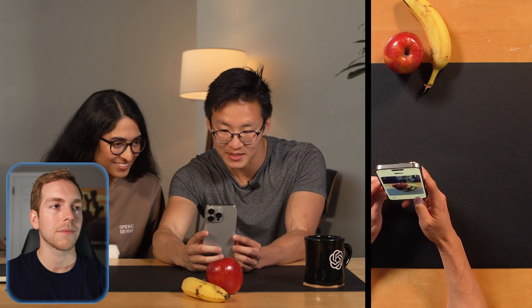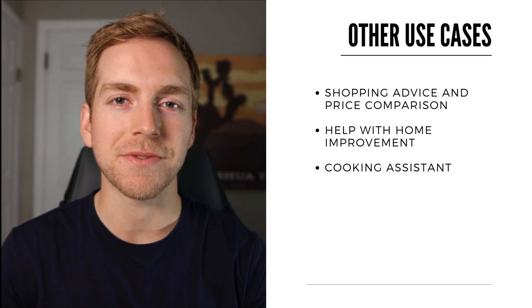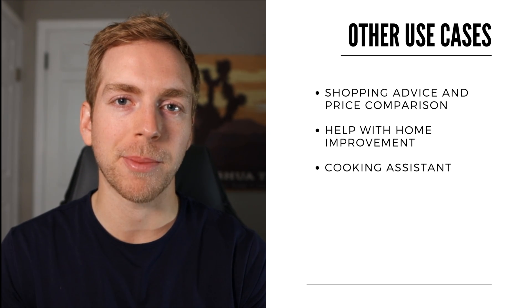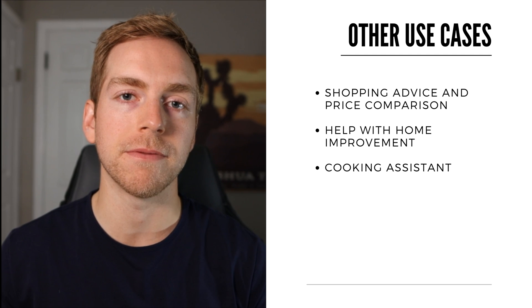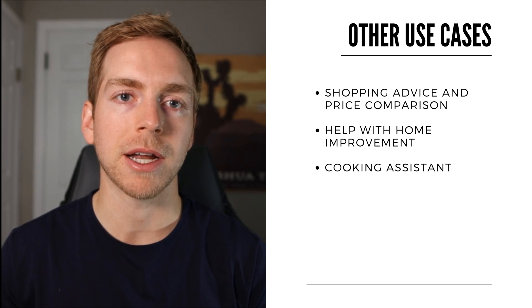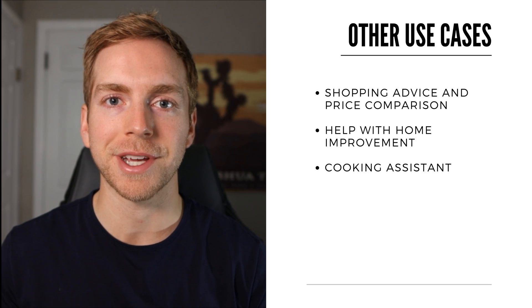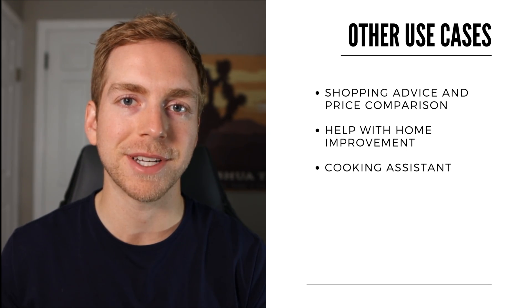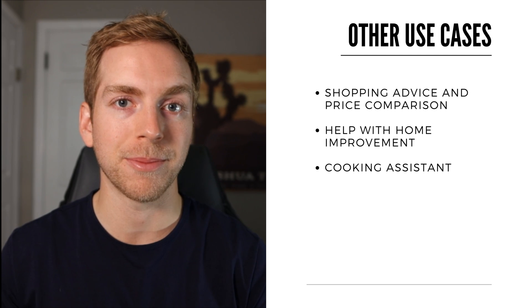In this first demo, someone asks ChatGPT to help them learn Spanish by naming objects in the room. The model responds immediately — pointing at objects like an apple and a banana, giving their Spanish names: una manzana and un platano. You can see just how powerful the audio and video combined with this new model is — just looking around the room and pointing at objects, getting the Spanish translation immediately.